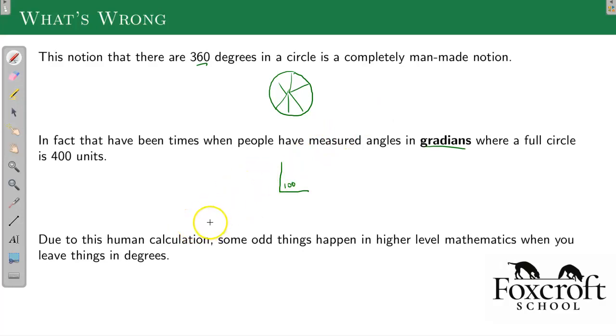And due to this kind of human element of just picking a number, when you go into higher level mathematics, this 360 always keeps popping up and causing problems. We need to figure out another way to define an angle.